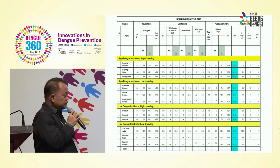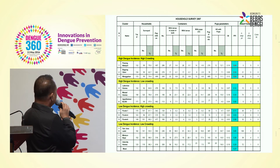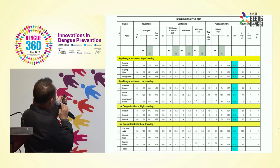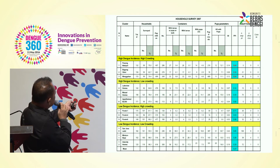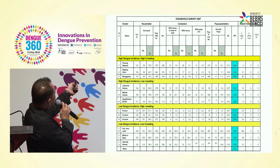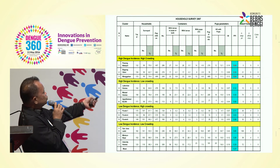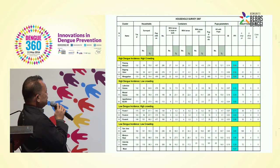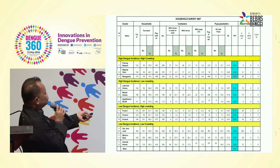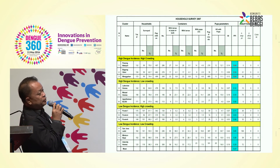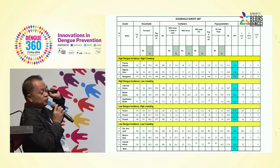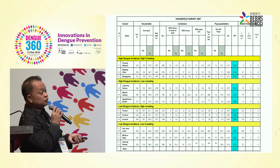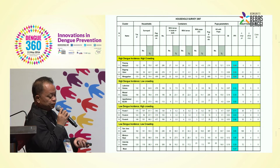This is the result of our first larval survey conducted in 2007. Looking at high dengue incidence, high crowding grouped clusters versus high dengue incidence low crowding, low dengue incidence high crowding, and low dengue incidence low crowding — it is only the high dengue incidence, high crowding cluster which showed higher pupal per person index (PPI), ranging from 0.44 to 0.31. We averaged the whole PPI and the mean was 0.31. Anything higher than 0.31 was considered higher pupal density index, and anything below 0.31 was considered low pupal density.